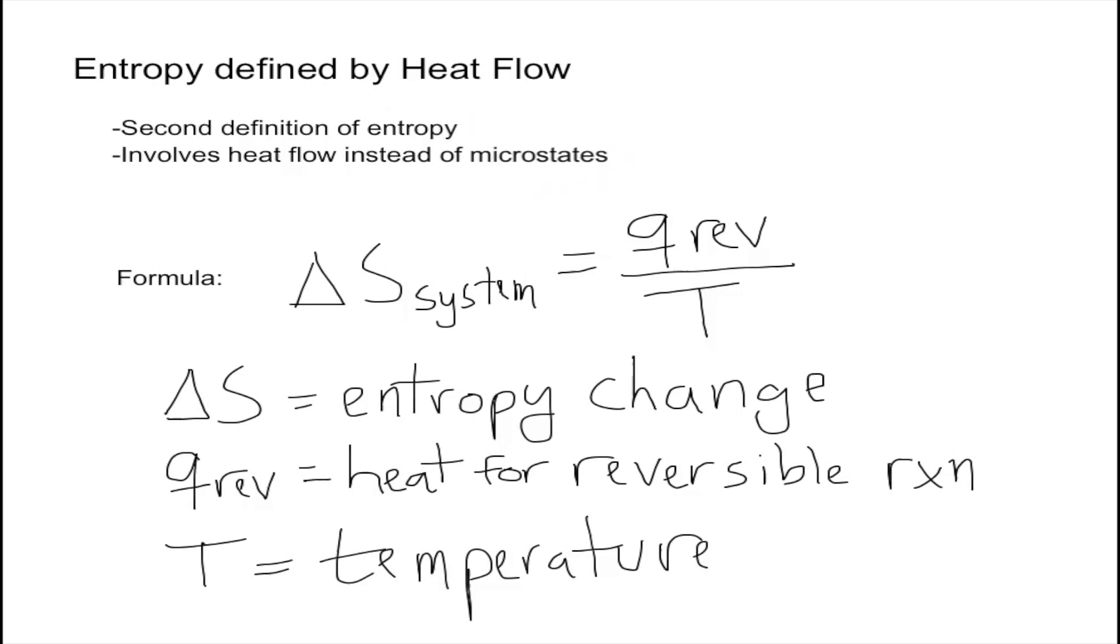We saw the formula and calculations for that in the previous video. That definition with microstates involves more statistics, while this heat flow definition involves more chemistry. This is the definition we use when we talk about entropy in chemistry.